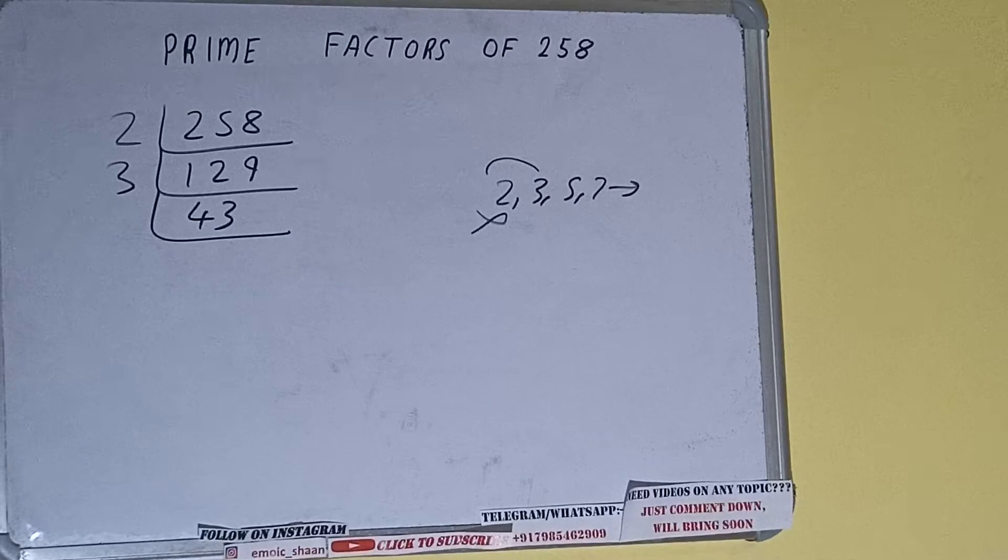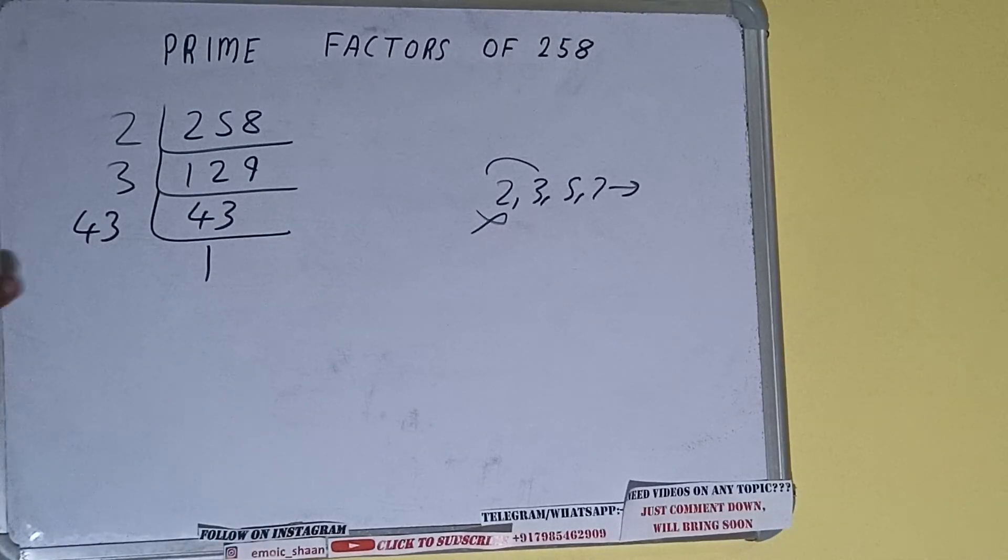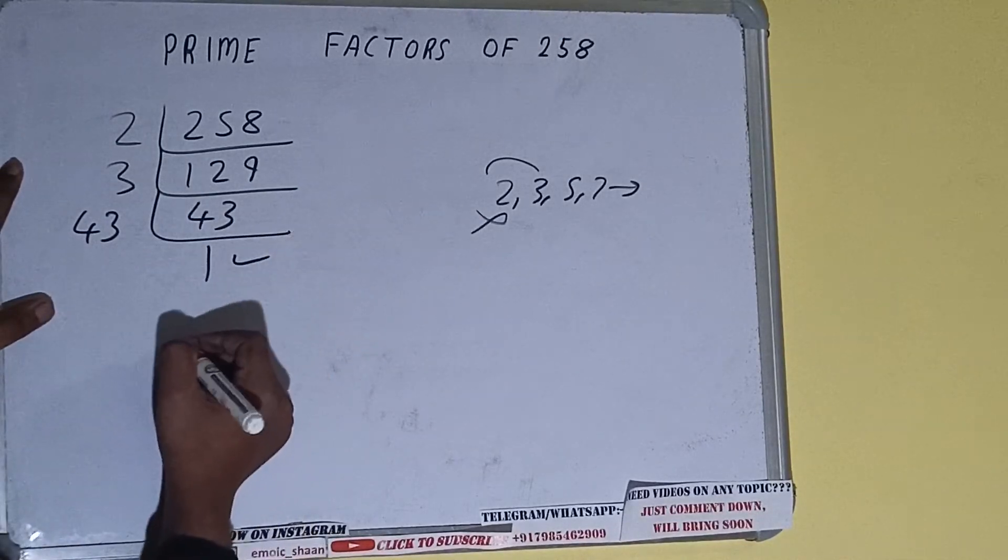And 43 is also a prime number, so it is only divisible by itself, that is 43. And once we do so, we'll be getting 1. Once we get 1, we need to stop and do one last thing.